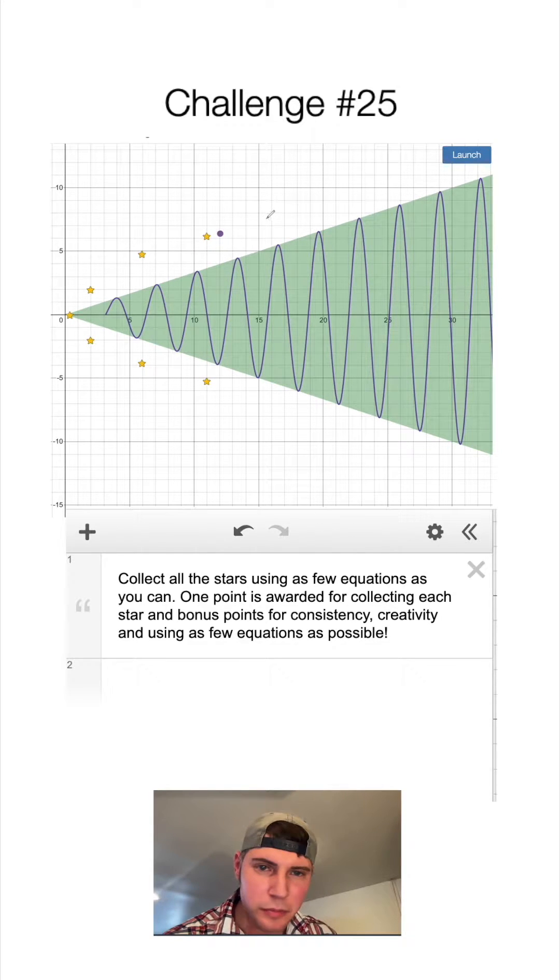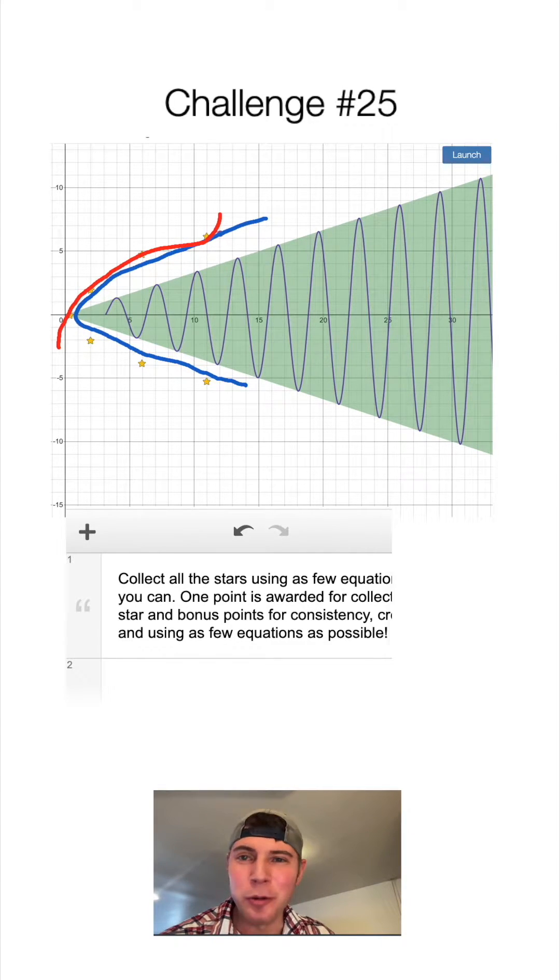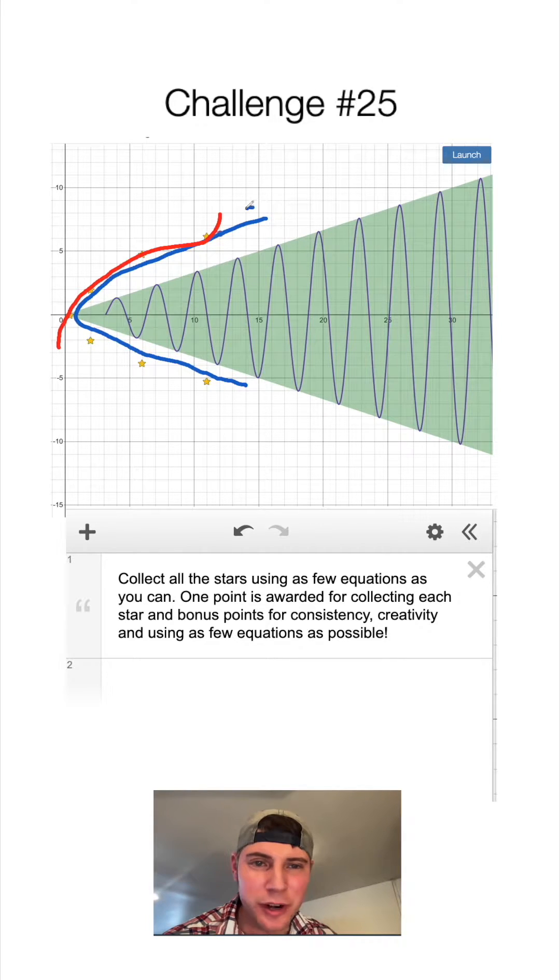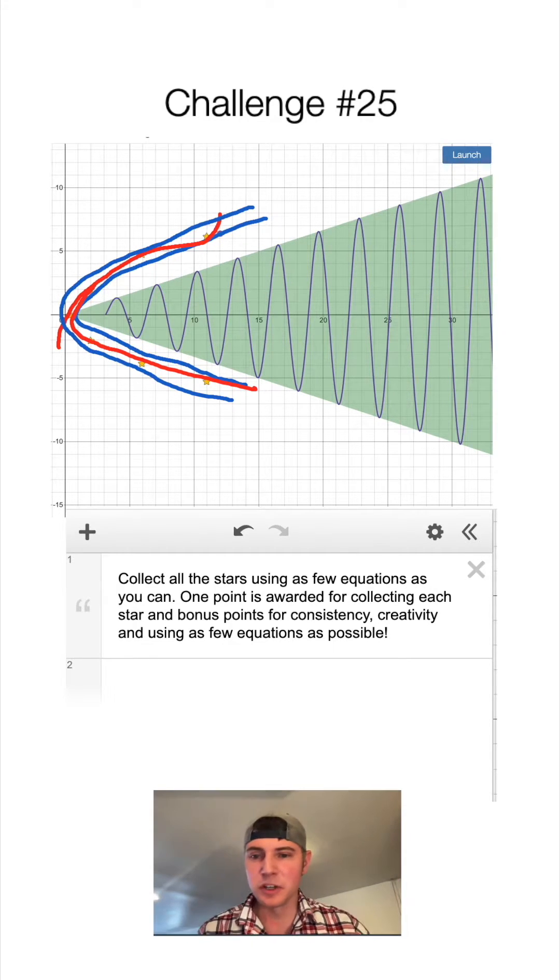I'm thinking the best way to do this would be maybe a parabola going like this. That way the marbles will go like this and hit these top stars. Then I want to put a second parabola right here that would make like a little tube for it to travel through so that then the marbles would go like this and hit the other stars. So we just want to take two sideways parabolas and make some transformations.